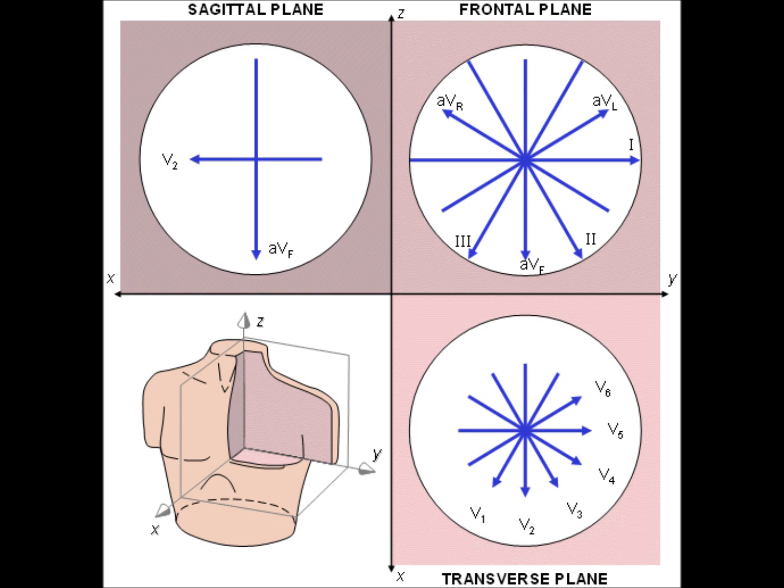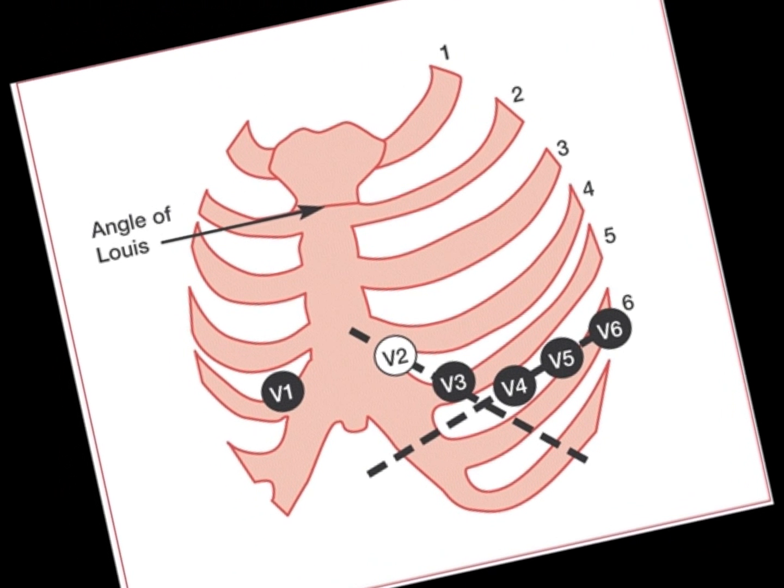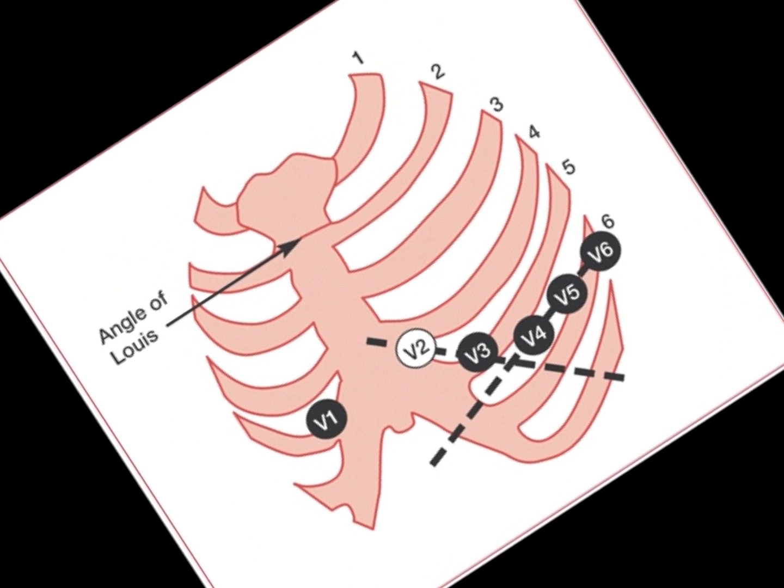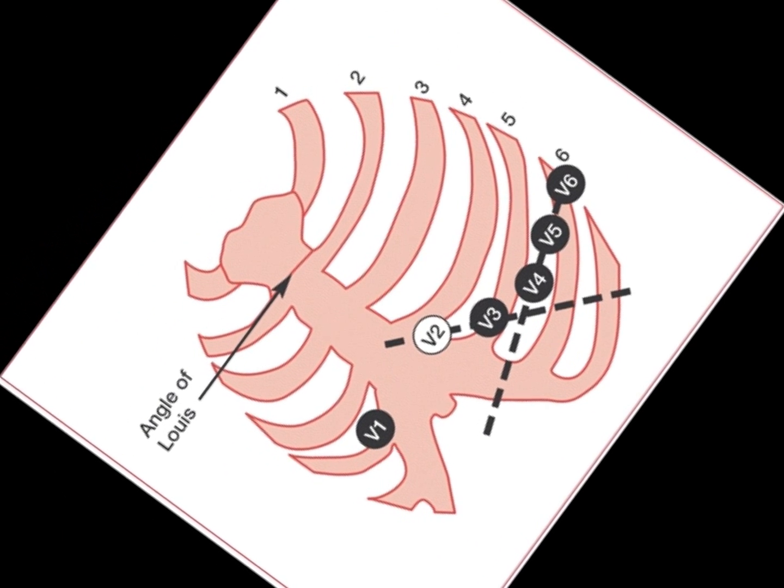V3 is located midway between V2 and V4, and it views the anterior surface of the left ventricle. V4 is placed at the left midclavicular line, in 5th intercostal space, and also looks at the anterior surface of the left ventricle.